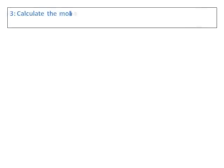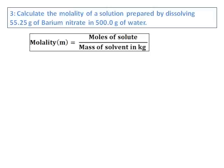Calculate the molality of a solution prepared by dissolving 55.25 grams of barium nitrate in 500 grams of water. Not a difficult question. Before we start, we will just define what molality is.